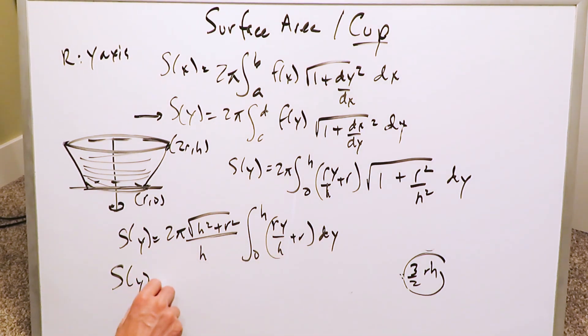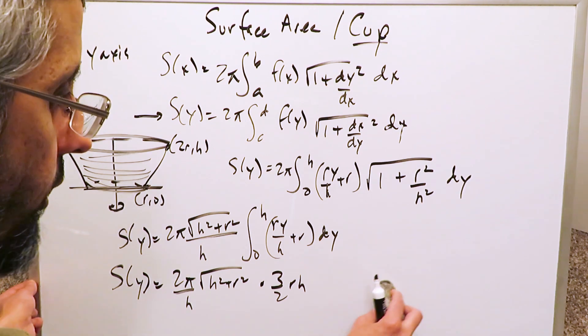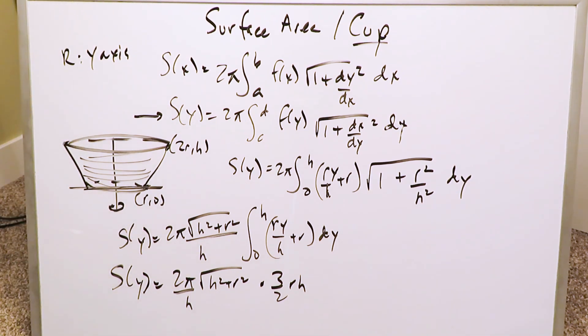What we end up seeing is surface area with respect to y: you have 2π and then you have √(h² + r²). You have this denominator h multiplying with that (3/2)rh. All of this will give you an equation form representing the surface area for something which looks like this, which could be a short cup or it could be a bowl, having a good average appearance and dimension.